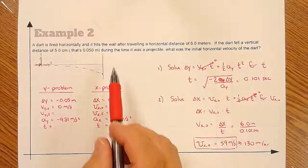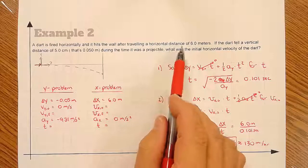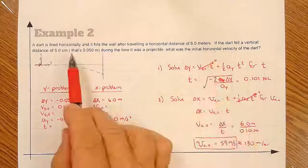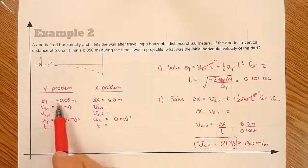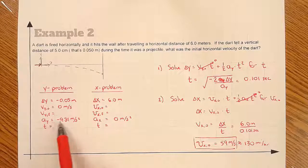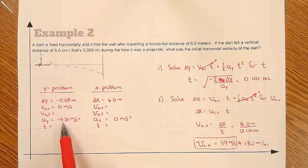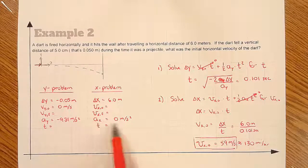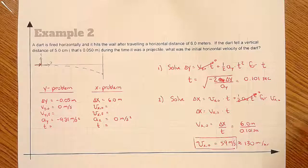Remember: if you know the distance the projectile falls, that's delta y and it's going to be negative. The acceleration in the y direction is always negative 9.81 meters per second squared, and the acceleration in the x direction is always zero.